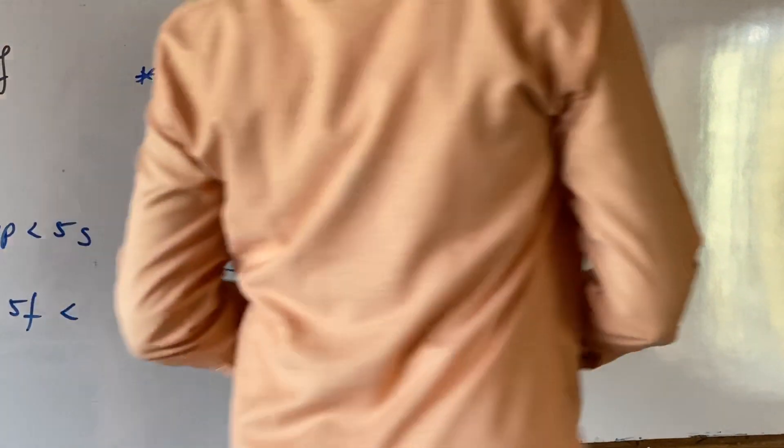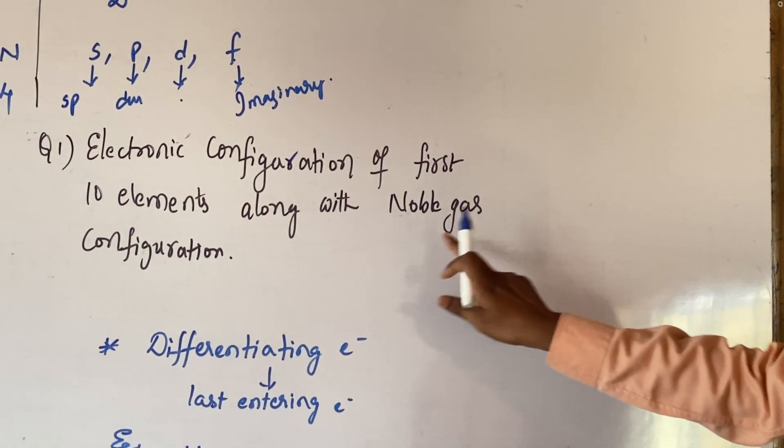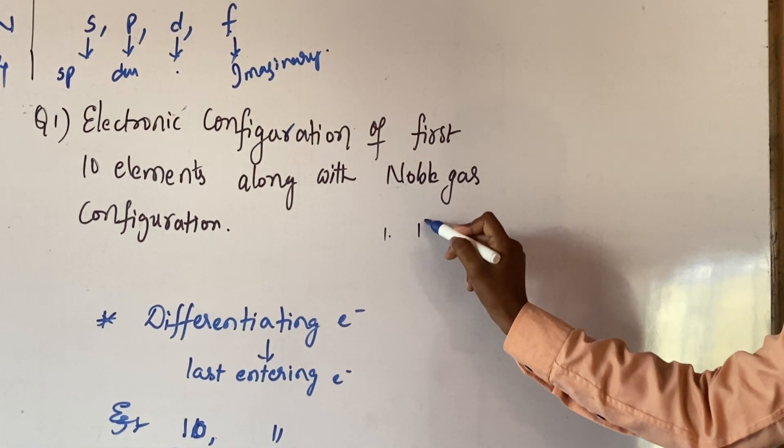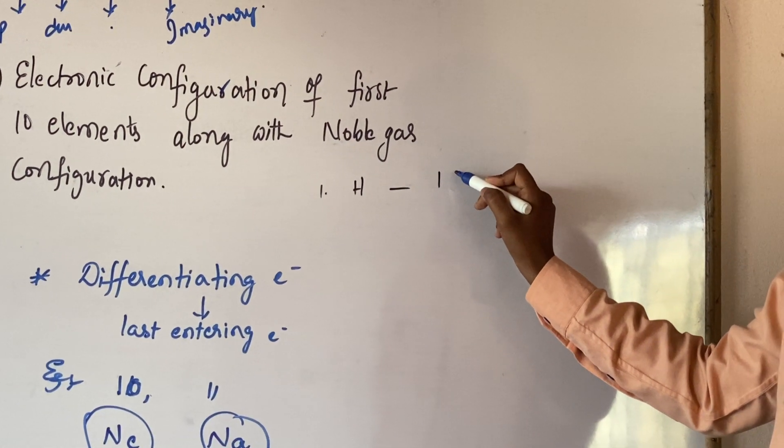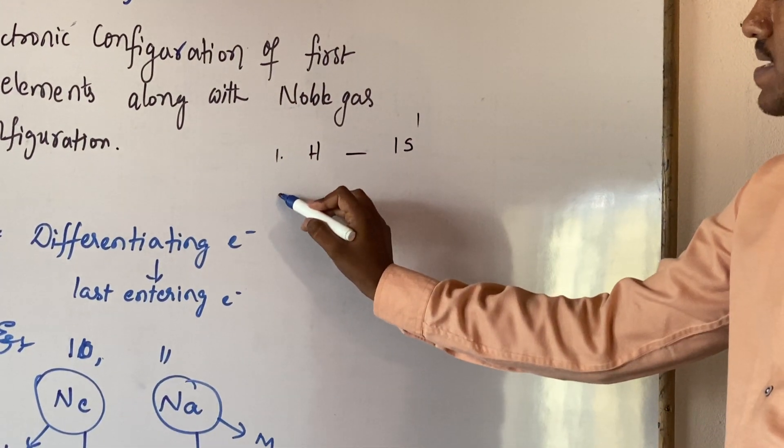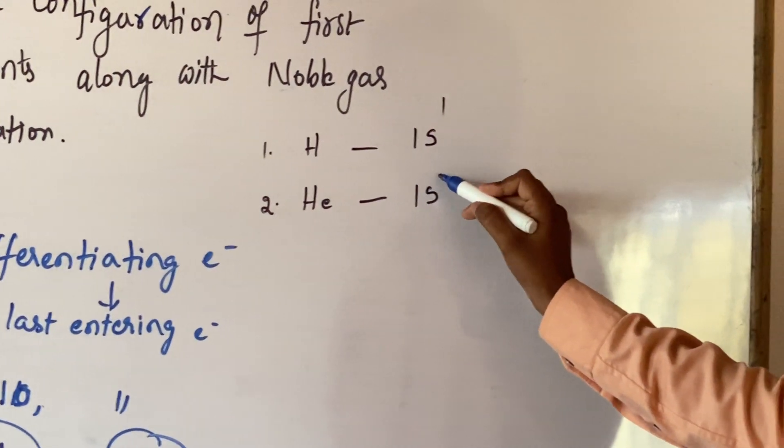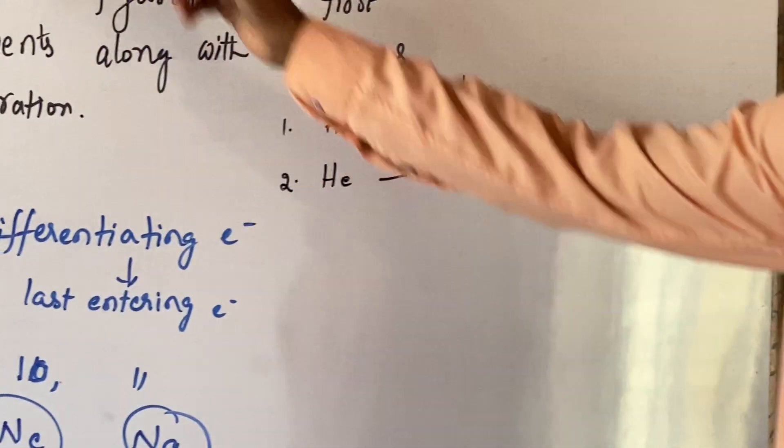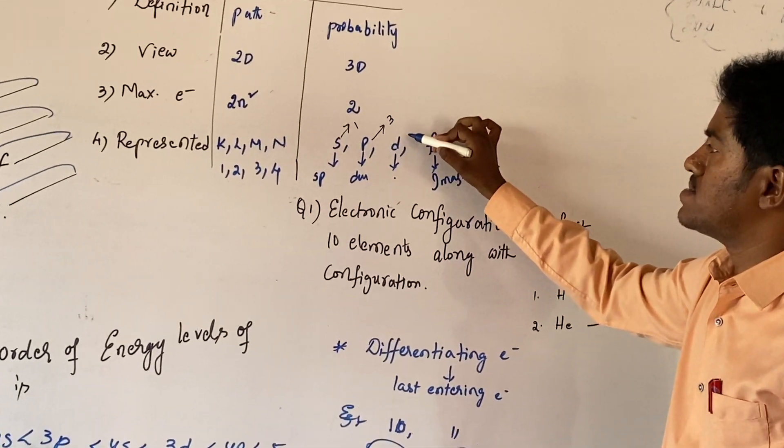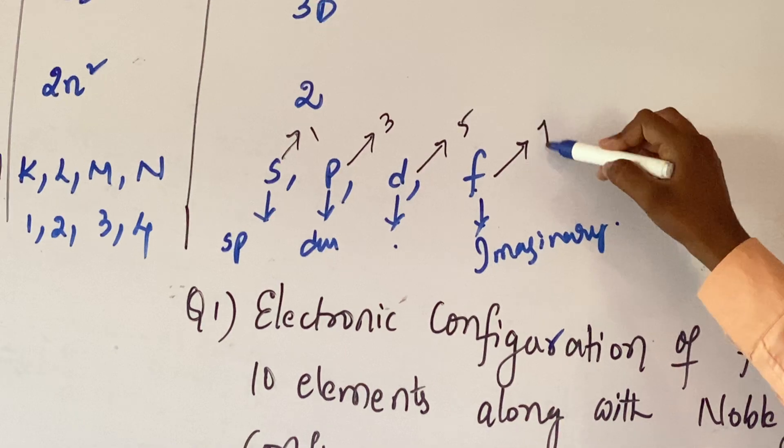Now, the electronic configuration of electronic configuration of first 10 elements along with the noble gas configuration. While taking the first element that is... Now, S, max number of degenerated orbitals, 1, P, degenerated orbitals, 3, D, degenerated orbitals, 5, F, degenerated orbitals, 7.